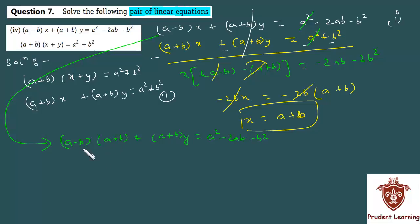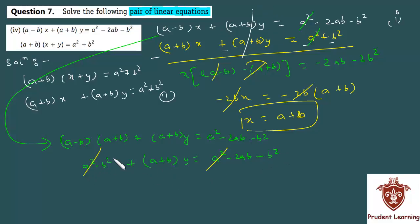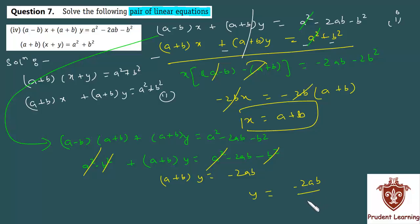Now, (a plus b) into (a minus b) gives us a squared minus b squared. So: a squared minus b squared plus (a plus b) y is equal to a squared minus 2ab minus b squared. The a squared and minus b squared cancel out on both sides, giving us (a plus b) into y is equal to minus 2ab, which gives y equal to minus 2ab over (a plus b).